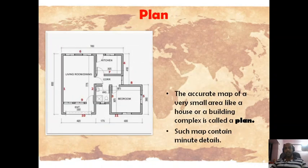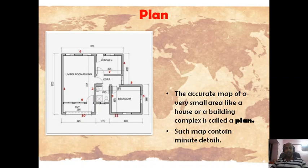A plan is an accurate map of a very small area, like a house or a building complex. While preparing a plan, a scale must be assumed. As you can see in this plan of a building, the length and breadth of each room is mentioned — whether it is a living room, kitchen, bedroom, etc. A plan contains minute details about an area.